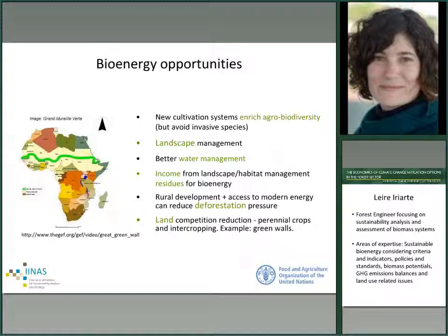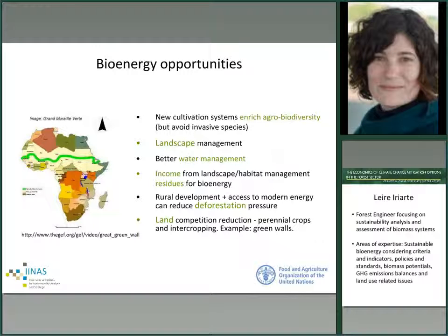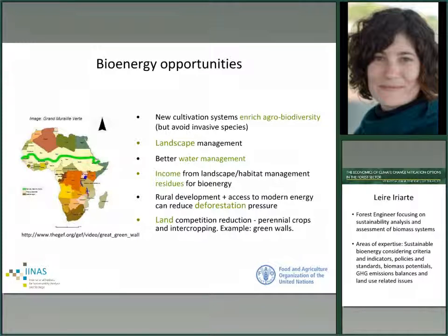Perennials can improve water retention. Also, income could be generated from residues obtained from landscape or habitat management. Intercropping with food and agroforestry, plus cultivation of perennial crops on low-carbon and degraded land, can improve carbon balances and can help to restore soils, which can reduce land competition. An example of that could be the green walls in Africa, which can deliver fuel wood and modern bioenergy, providing income and offering a base for agroforestry, so food security could be improved in parallel.